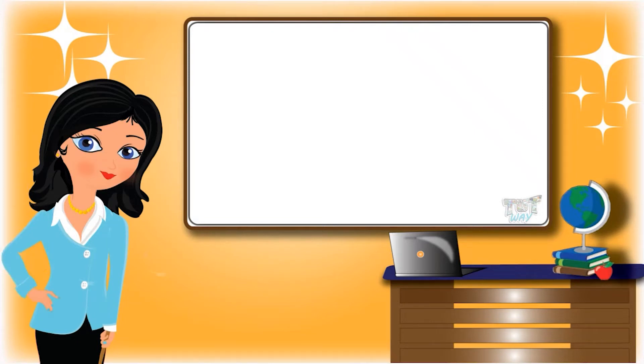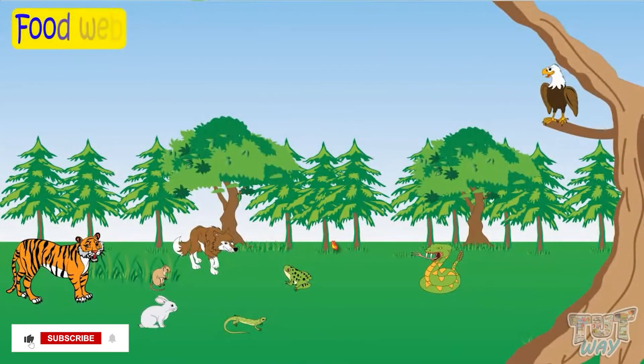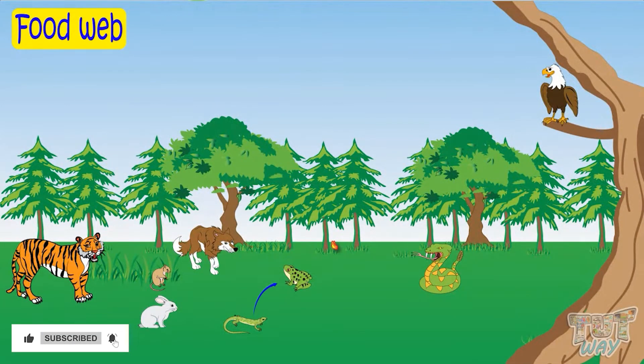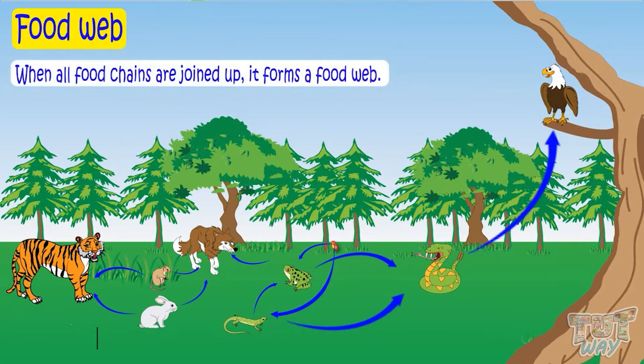Hi kids, today we will learn what is food web and examples of food webs. So let's start. There is not one but many food chains in a single habitat, and when all food chains are joined up it forms a food web.